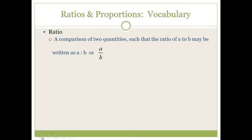What is a ratio? A ratio is a comparison of two quantities, such that the ratio of A to B may be written as A colon B, which we read as A to B, or as a fraction, A over B.